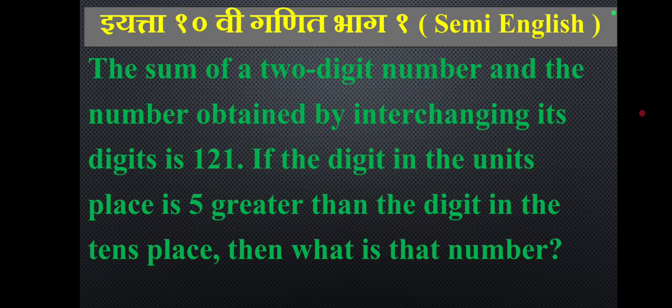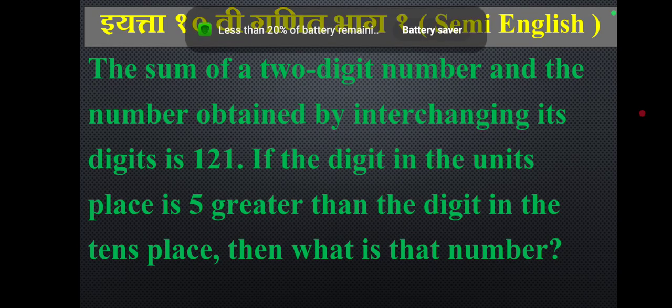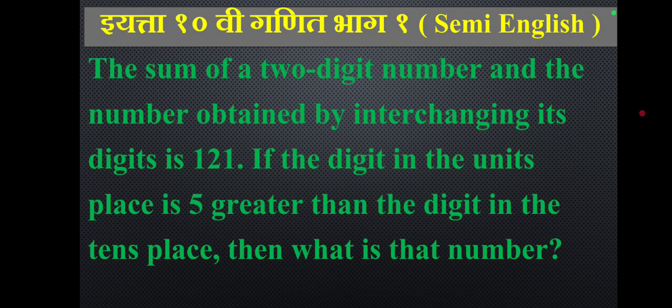The sum of a two-digit number and the number obtained by interchanging its digits is 121. If the digit in the units place is 5 greater than the digit in the tens place, what is that number?